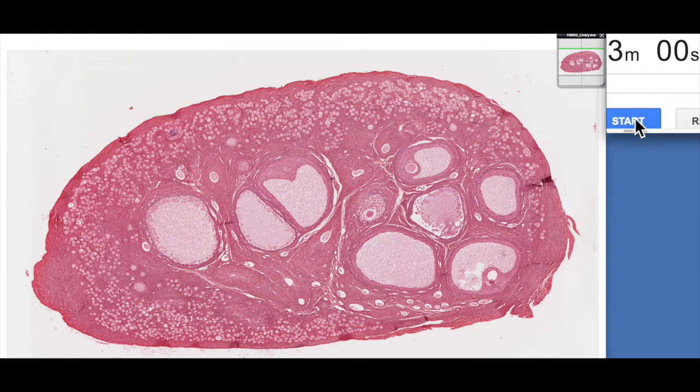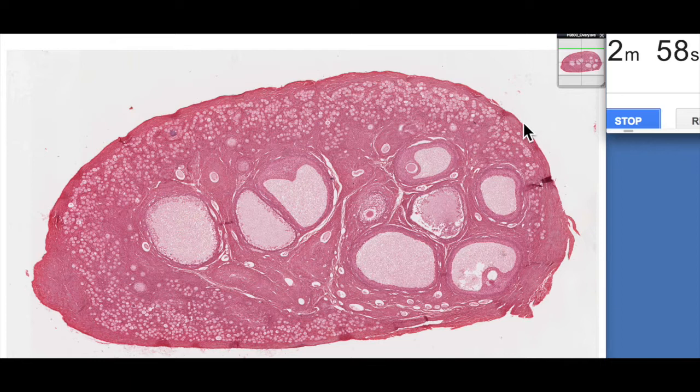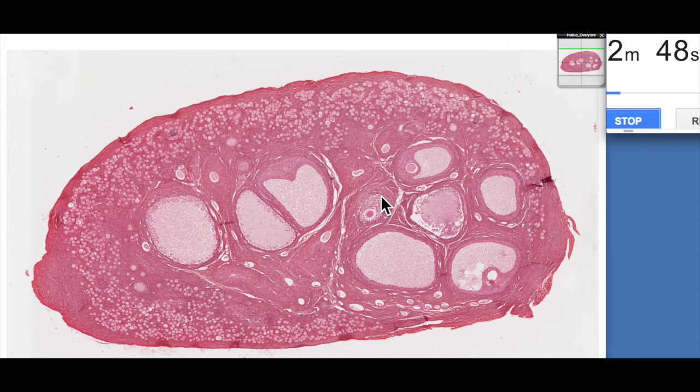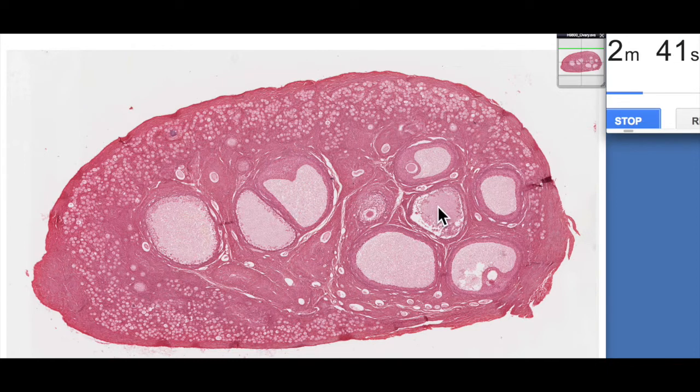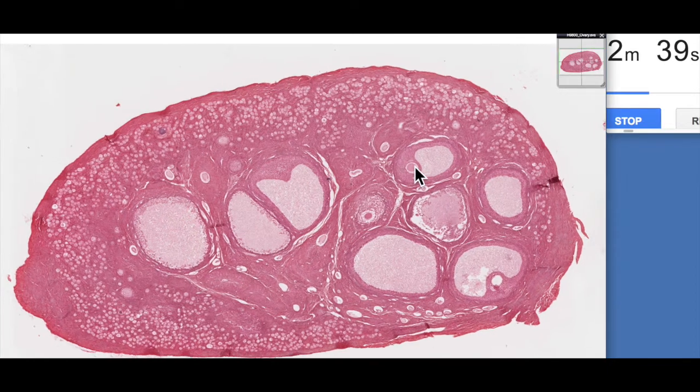You can see here we've got lots and lots of primordial follicles, and then these large spaces. These are actually different stages of antral follicular development. Now some of these are actually undergoing breakdown, or atresia as we call it. Here's a nice early antral follicle.